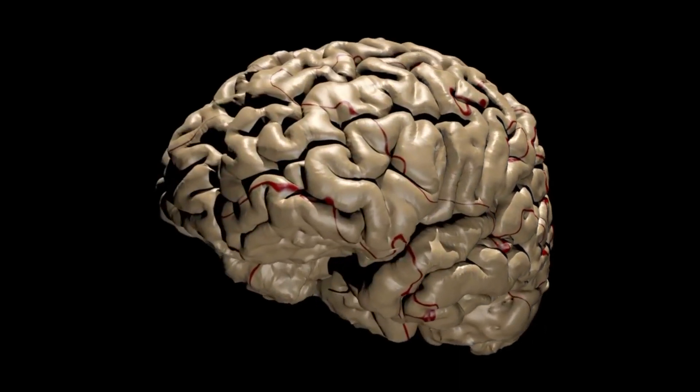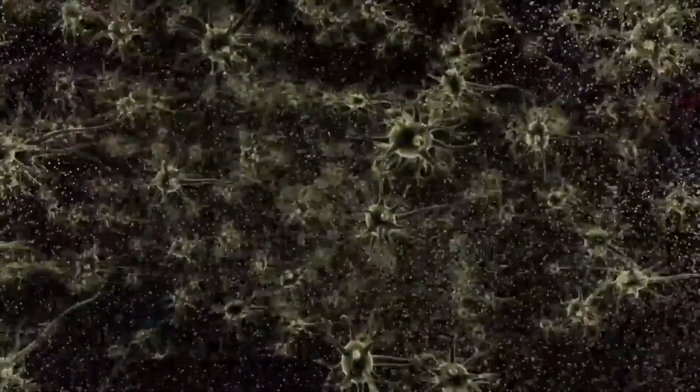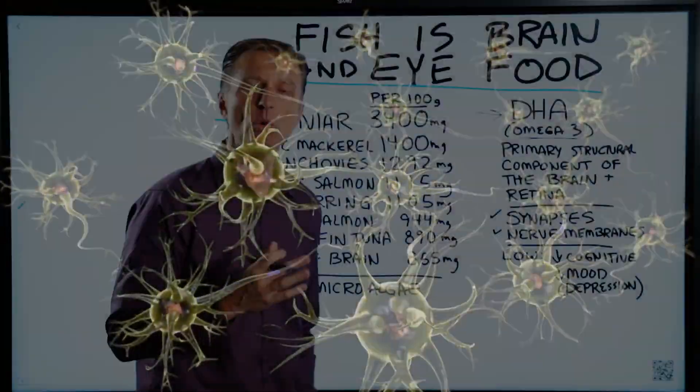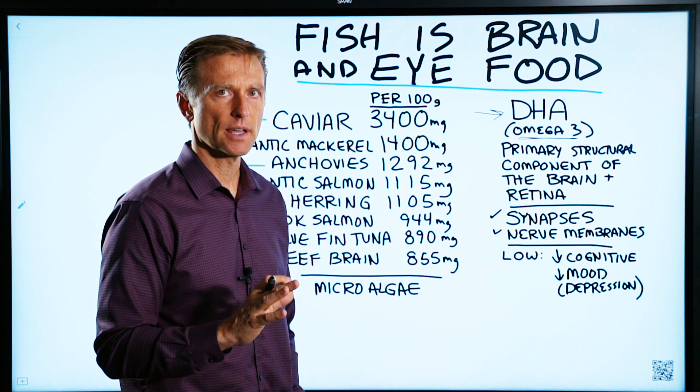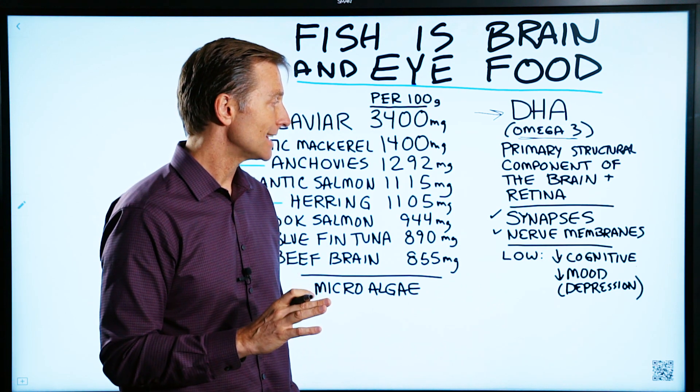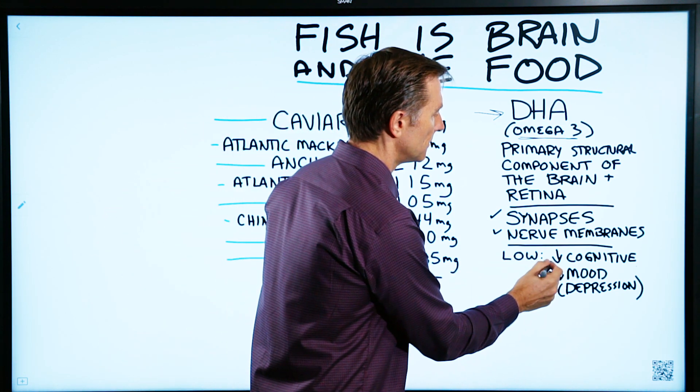In the brain, it makes up the synapses, which is basically the connection between the nerve cells. If you're low in DHA, it can affect many different things, but the two things that really stand out are lowered cognitive function.